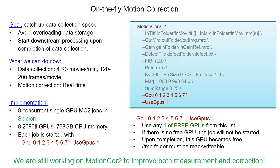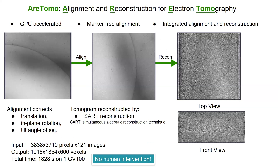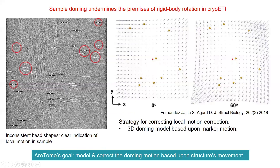This concludes my portion about MotionCor2. Next I would like to talk about RTOMO — it stands for Alignment and Reconstruction for Electron Tomography. This is quite new GPU-based software. It takes a raw tilt series as input, performs marker-free alignment, and the aligned tilt series is then fed into fast reconstruction.